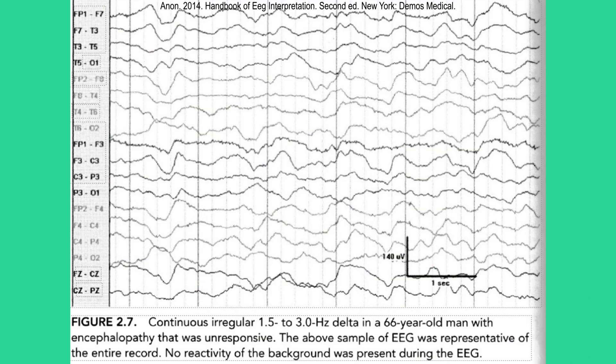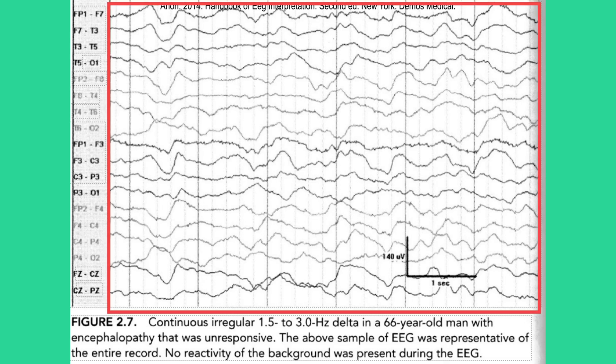Consider this case of a 66-year-old man diagnosed with encephalopathy who was found to be unresponsive and immediately connected to an EEG. The recorded data showed continuous irregular delta activity ranging from 1.5 to 3 Hz, with no background reactivity observed throughout the recording.